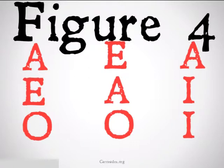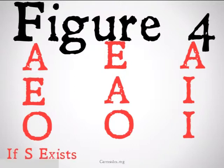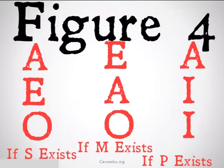It's also important to note that if we remember back to the unconditionally valid forms, Figure 4 only has three unconditionally valid, while everyone else has four. Figure 4 is also a little weird because each of these moods is going to depend on the existence of a different term to be valid. AEO is only going to be valid if S exists, EAO is only going to be valid if M exists, and AII is only going to be valid if P exists. Let's take a look.